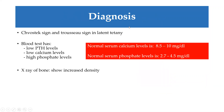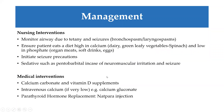For diagnosis, the Chvostek and Trousseau signs can help point us in the right direction. Blood tests are the gold standard — they will show low levels of parathyroid hormone, calcium levels below 8.5, or phosphate levels higher than 4.5. X-ray or imaging will show increased bone density because calcium is being taken from the blood into the bone due to hypoparathyroidism.